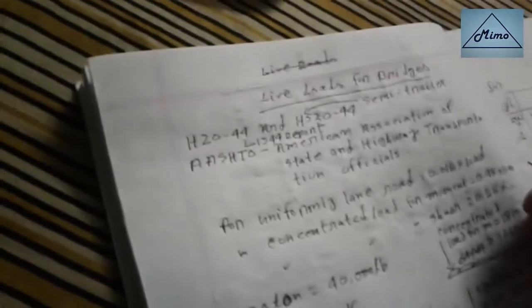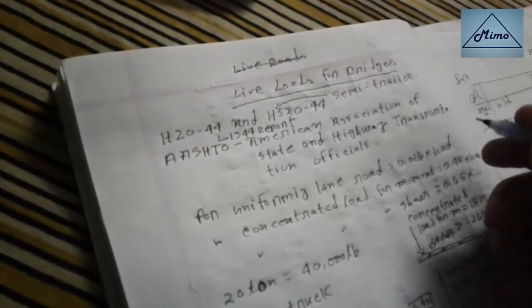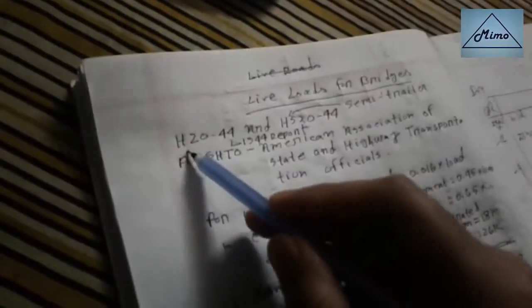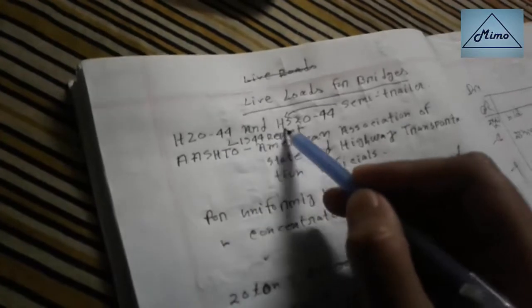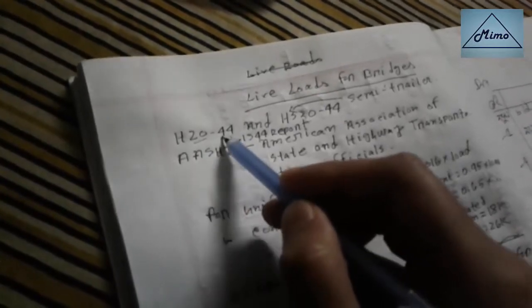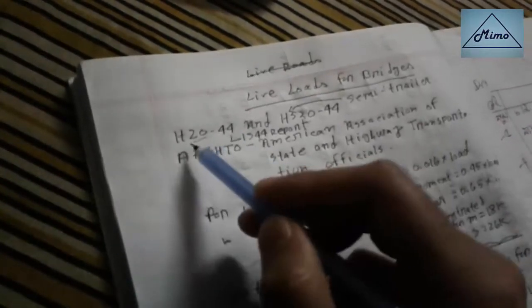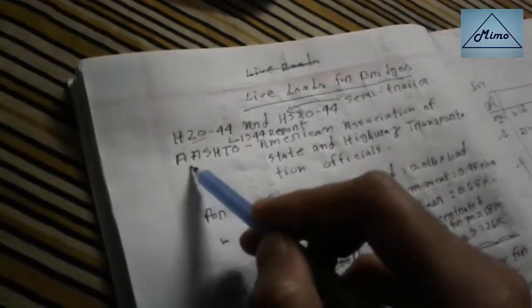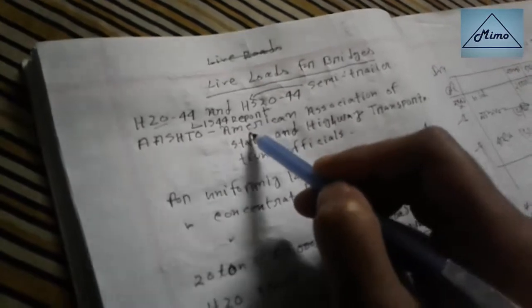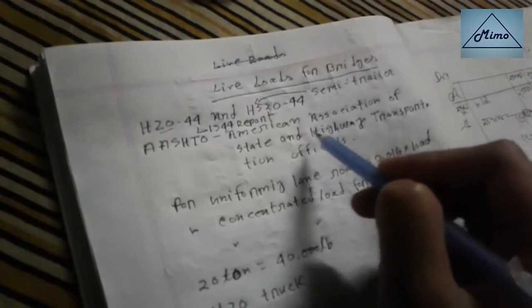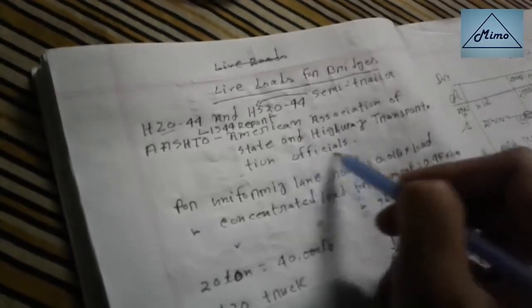Hi guys, today I'm going to show you the live load rules for bridges — that means H20 and HS20. The '20' means 20 tons, and '44' means this type of load was reported in 1944 by AASHTO, the American Association of State Highway and Transportation Officials.